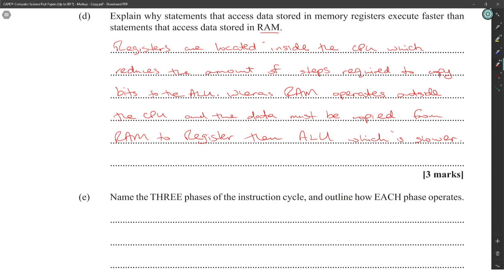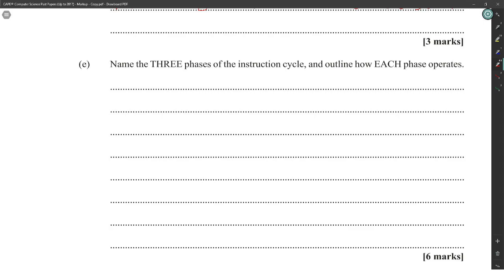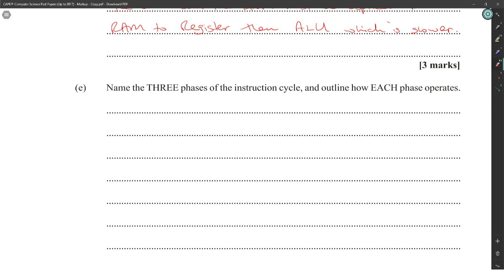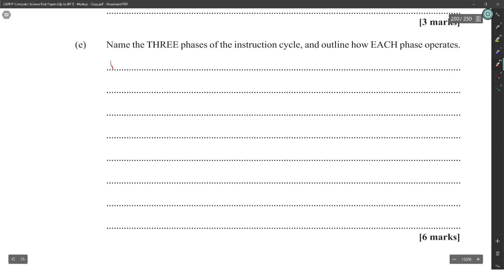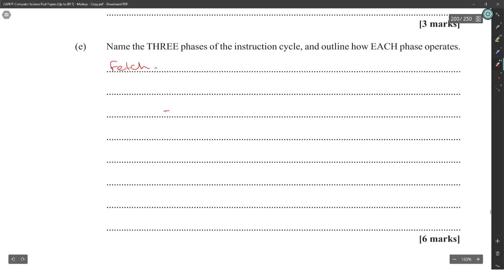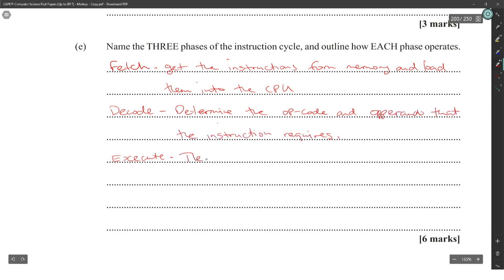Name three phases of the instruction cycle and outline how each phase operates. Fetch: the instruction is copied from memory to the instruction register. Decode: the control unit determines what the instruction requires. Execute: the ALU carries out the mathematical operation necessary and stores the result. Fetch, decode, and execute are normally the three that they ask for, but there is also a case for store, which is sometimes bunched together with execute.